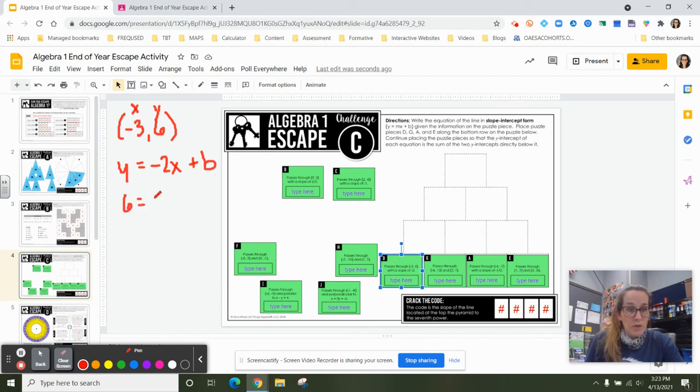So 6 is equal to negative 2 times negative 3 plus b. And now I only have one letter that I don't know, one unknown value. So I can solve to find what b is.